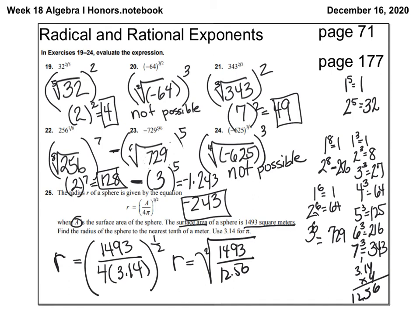Using a calculator, 1,493 divided by 12.56 is approximately 118.87. So r equals the square root of 118.87. Taking the square root gives approximately 10.90. To the nearest tenth of a meter, the radius is 10.9 meters.